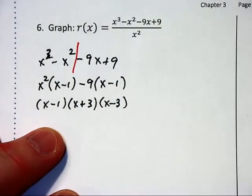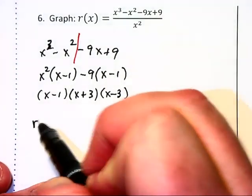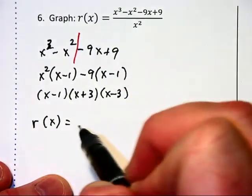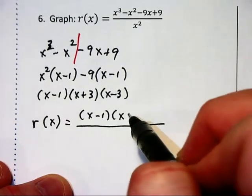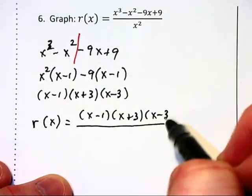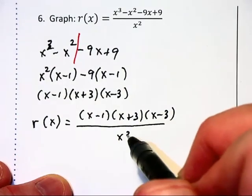So our original function that's up top there can be rewritten as r of x equals x minus 1, x plus 3, times x minus 3, all over x squared.